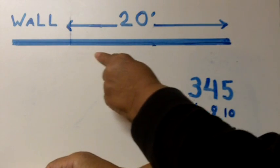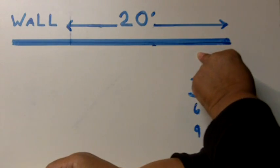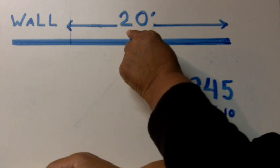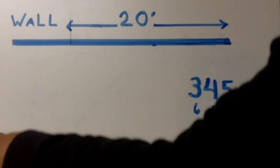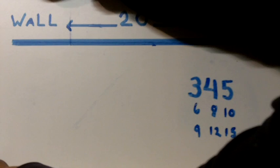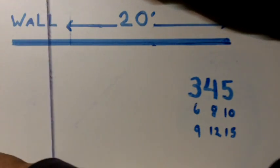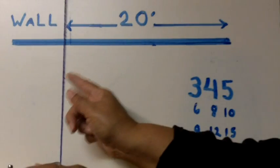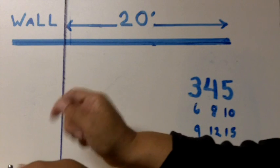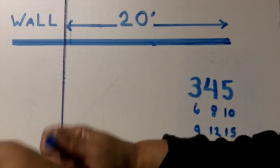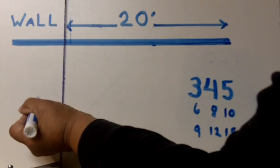This line here represents an existing wall and it's 20 feet long, so it's pretty long. I'm going to slide over chalk line and the chalk line is going to be the wall that we're going to build, and we want that wall to be 20 feet as well.